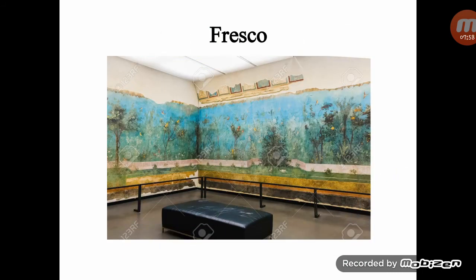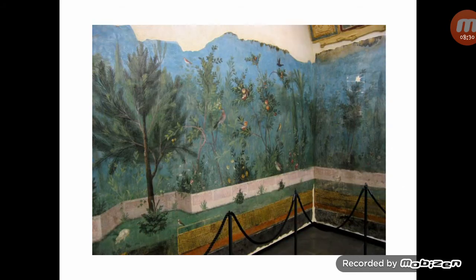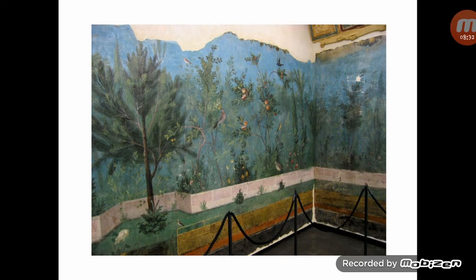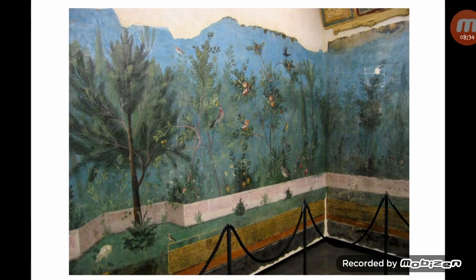Fresco paint is executed upon freshly laid lime plaster. Water is used as a vehicle for the pigment, and with the setting of the plaster, the painting becomes an integral part of the wall. Here are examples of fresco landscapes.